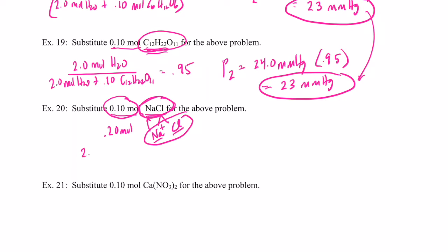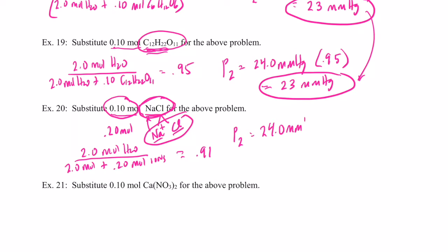So I have 2.0 moles of water divided by (2.0 moles of water + 0.20 moles of ions). The mole fraction is no longer 0.95 — it's 2.0 ÷ 2.20 = 0.91. So the new vapor pressure is 24.0 mmHg × 0.91 = 22 mmHg.